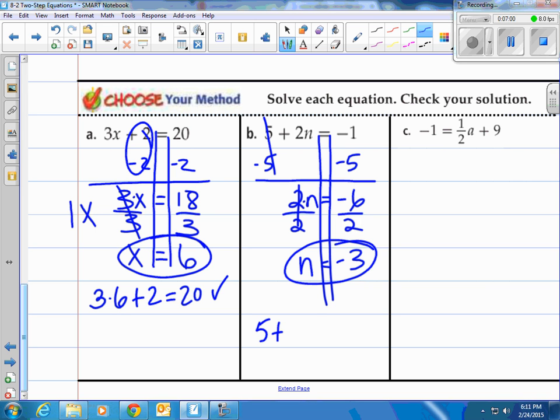Check it for yourself. 5 plus 2 times negative 3. Is that equal to negative 1? It sure is. Now, last one. Another one with fractions.